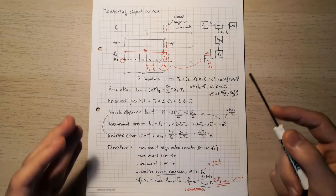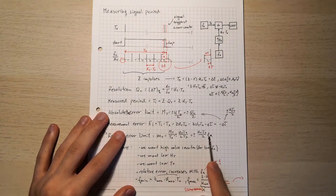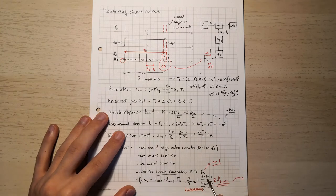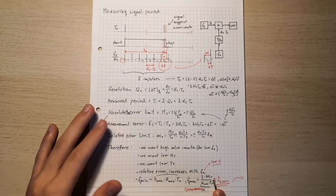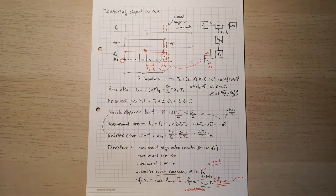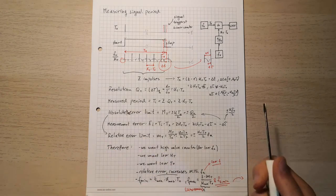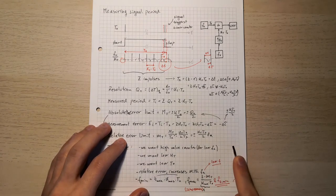We can calculate at which frequency this technique degrades by rearranging the formula to get frequency on the left side, giving us the maximum frequency formula. Our arguments are K minimum, which is 1, and MT — our maximum allowable relative error limit, say 1%, 0.1%, or 0.01%. If we use an error limit of 10 to the power of minus 4, our maximum frequency calculates to 2 kHz.